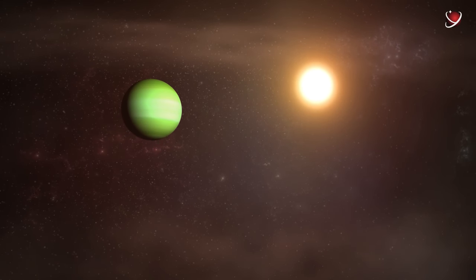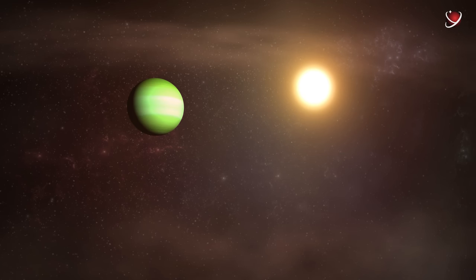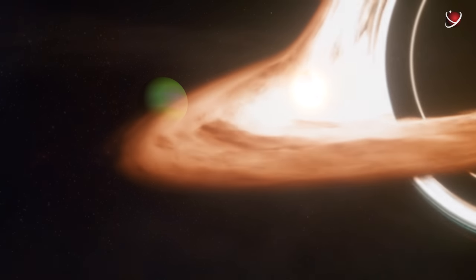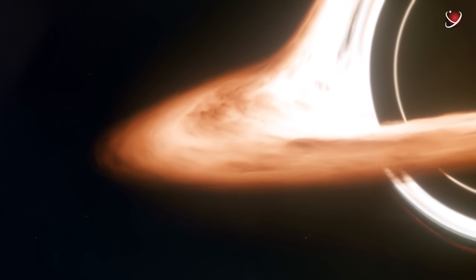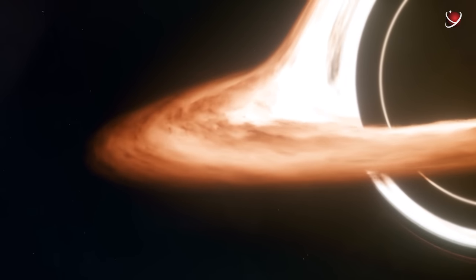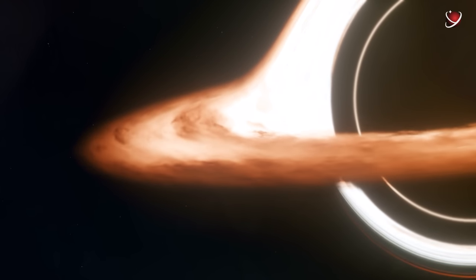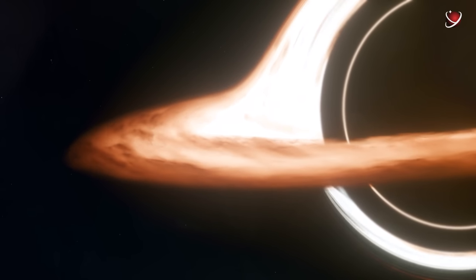The host star keeps the AU Mic b planet hidden inside a disk of cosmic dust. Observing variations in luminosity, astronomers concluded that the planet AU Mic b endures deadly bursts of X-rays and other radiation, robbing the planet of the slightest chance of life.